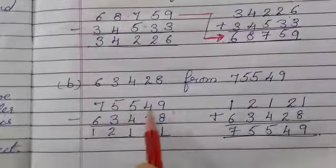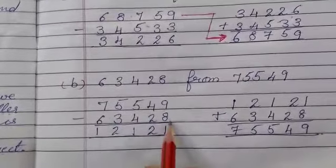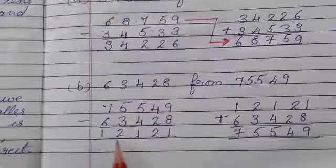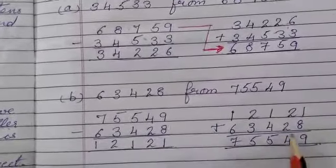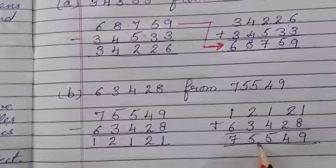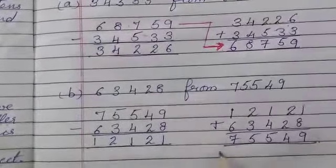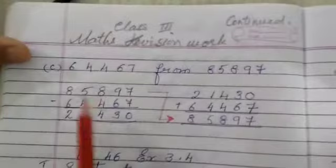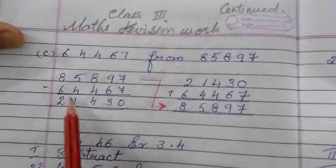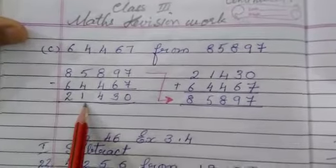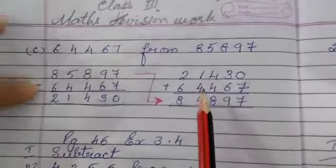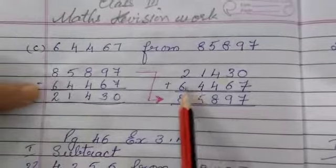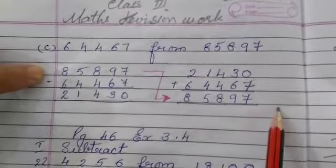Now 75,549 minus 63,428. So we get answer 12,121. Now we add 12,121 with 63,428 and we get the answer 75,549, means our sum is correct. Then here 85,897 minus 64,467, we get the answer 21,430. So what we do is we add 21,430 and the number which we have subtracted, and we get the number from which we have been subtracting.